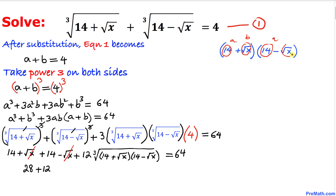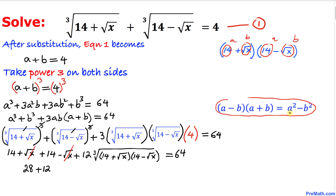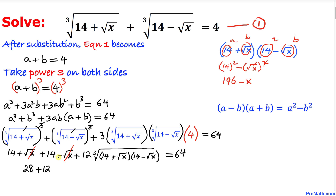Using the formula (a plus b)(a minus b) equals a² minus b², this becomes 14² minus (square root of x)². So 14 squared is 196, and the square and square root cancel, leaving us with 196 minus x.